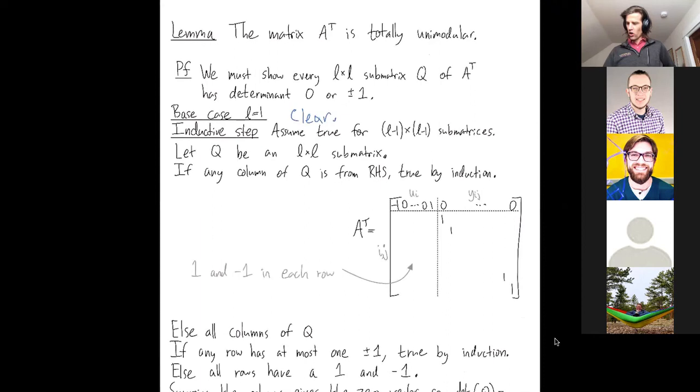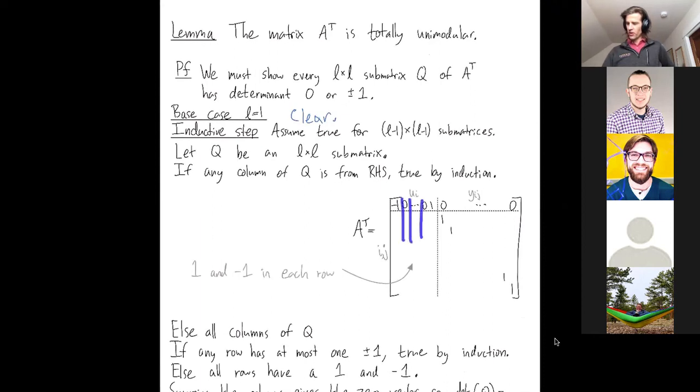Otherwise all columns of the submatrix are chosen from the left hand side and then we have correspondingly the same number of rows that are chosen. If any row that we choose has only either no plus or minus ones or only a single plus or minus one, then just do the cofactor expansion along that row, right. Pretend I have three rows and three columns from the left hand side. So I have this three by three matrix. If any row only has a single one or negative one, just do that cofactor expansion along that row and you'll have a smaller determinant showing up. So we're again done by induction.